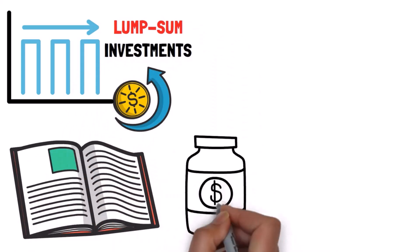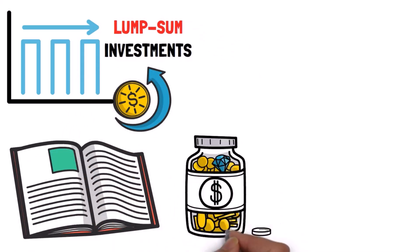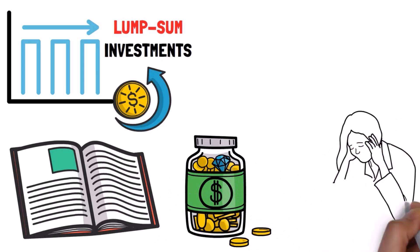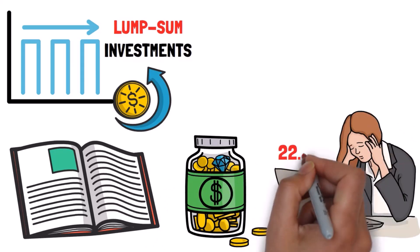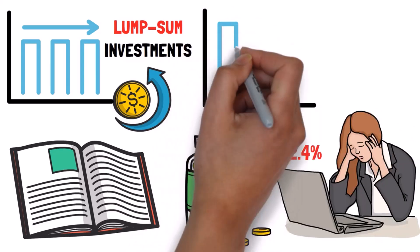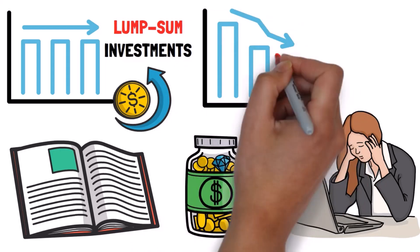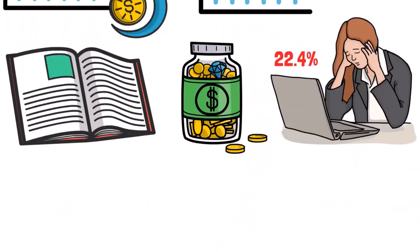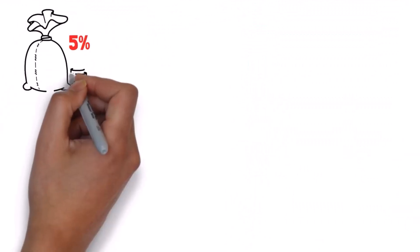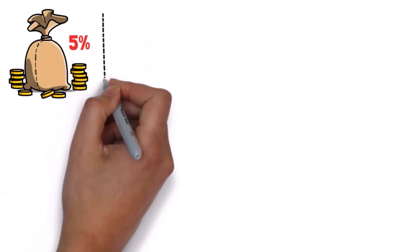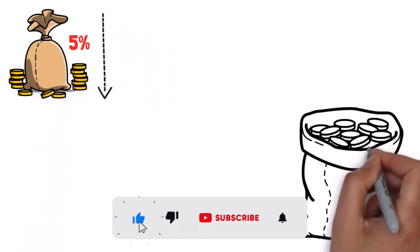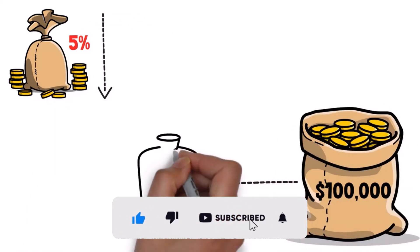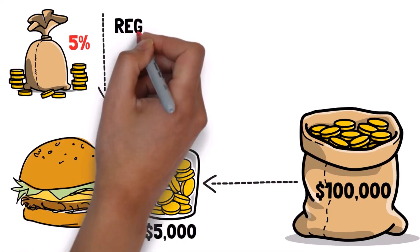There's a study showing that during recessions, people who invested all their money at once in the stock market experienced a loss of 22.4%, while those who invested periodically only saw a loss of 17.6%. Now, a 5% difference in loss might not seem like much, but if you have $100,000 invested, that's about $5,000, which is enough to buy 5,001 McDonald's cheeseburgers.